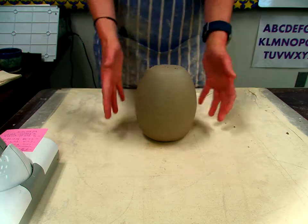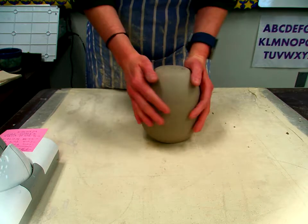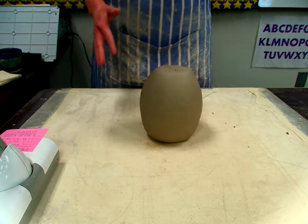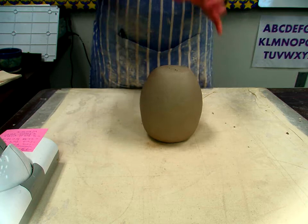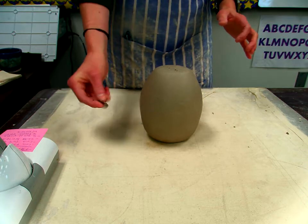All right, so in order to make a piggy bank, you have formed your shape, whatever it may be, and we have the shape smooth as we want it, paddled. We're ready to cut the slit for the coins for your piggy bank. So a quarter is probably about as big as a coin is what you're going to need. You'll need to make it larger than that.